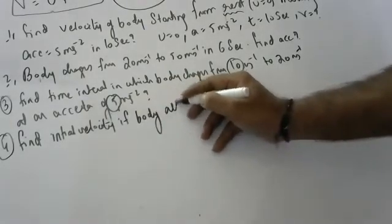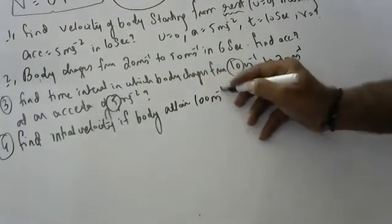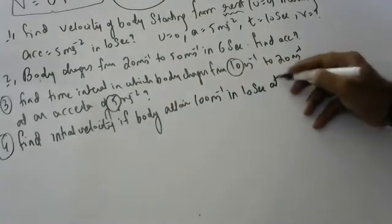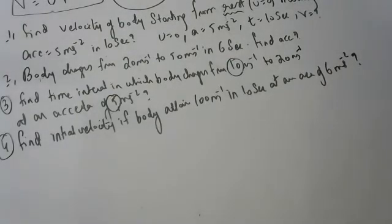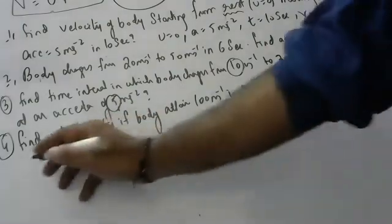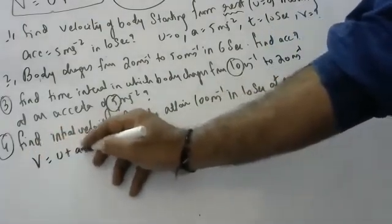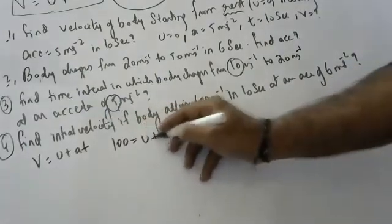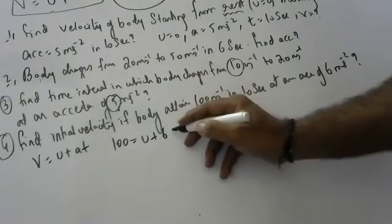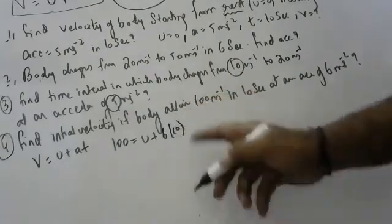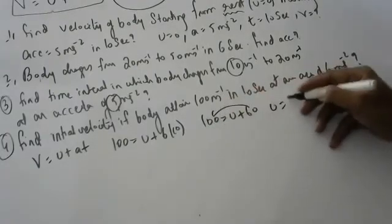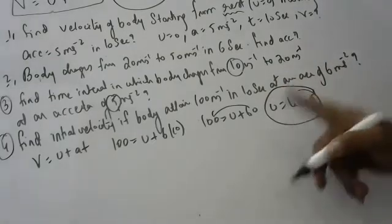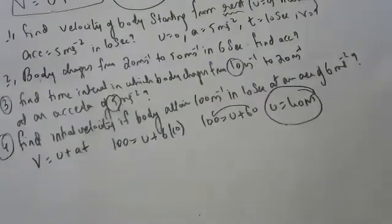Problem: a body attains 100 meters per second with an acceleration of 6 meters per second squared in 10 seconds. Find the initial velocity. Using V equals U plus AT: 100 equals U plus 6 times 10, so 100 equals U plus 60, giving initial velocity U equals 40 meters per second.